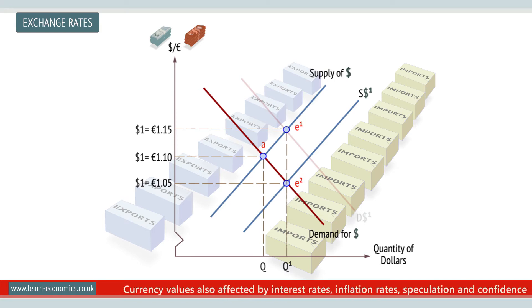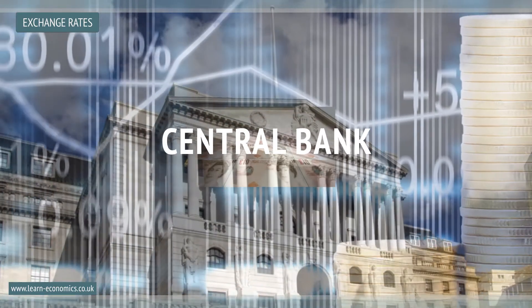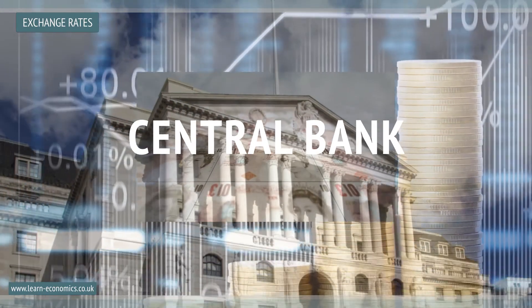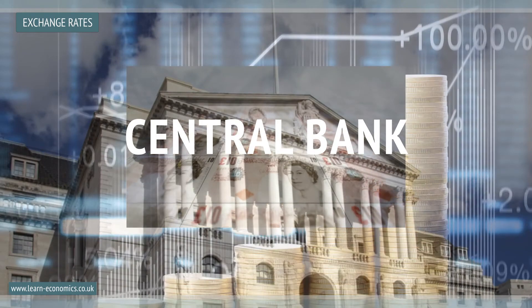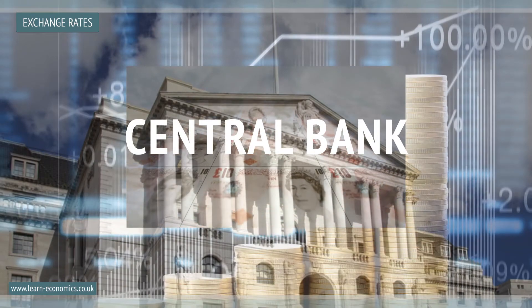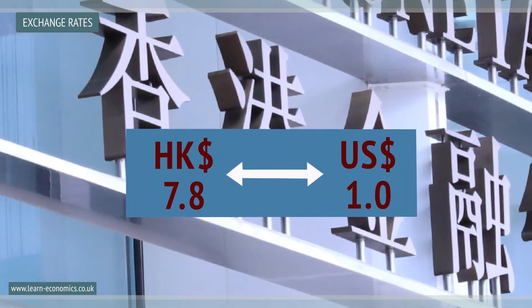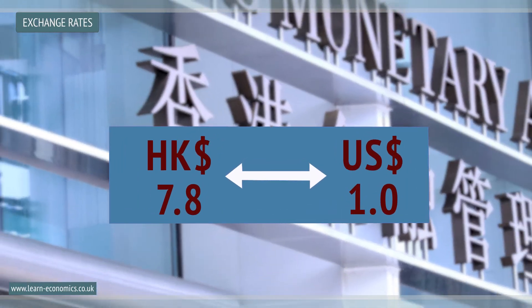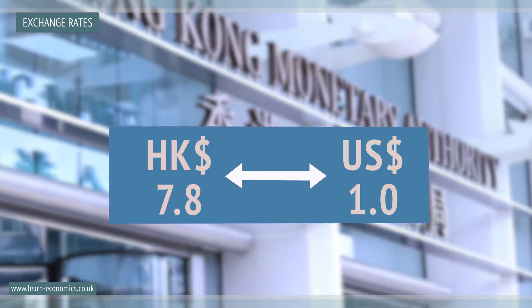In contrast, a fixed system involves currencies being pegged by a country's central bank or through a currency board, as in the case of the Hong Kong Currency Board, which pegs the Hong Kong dollar to the US dollar.